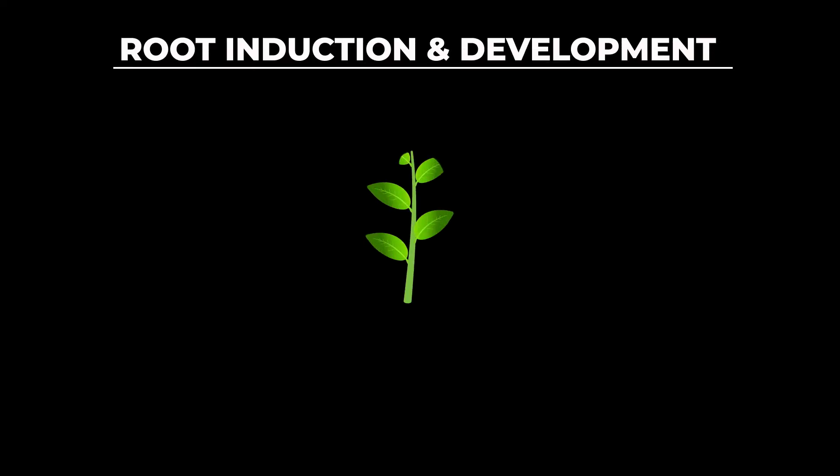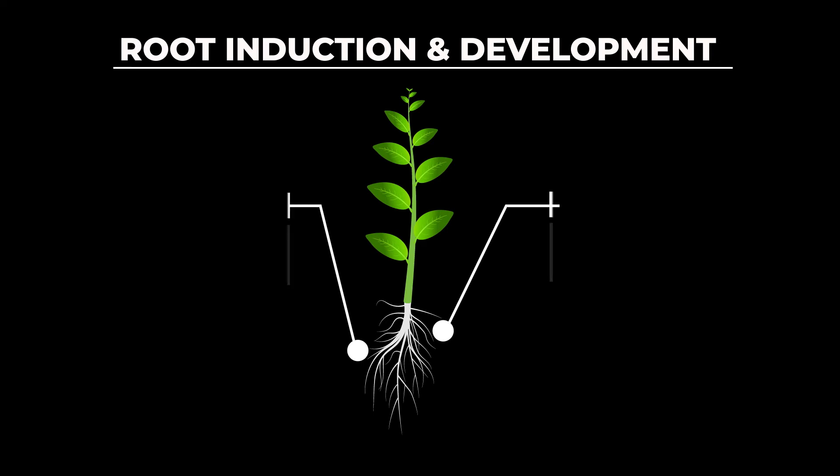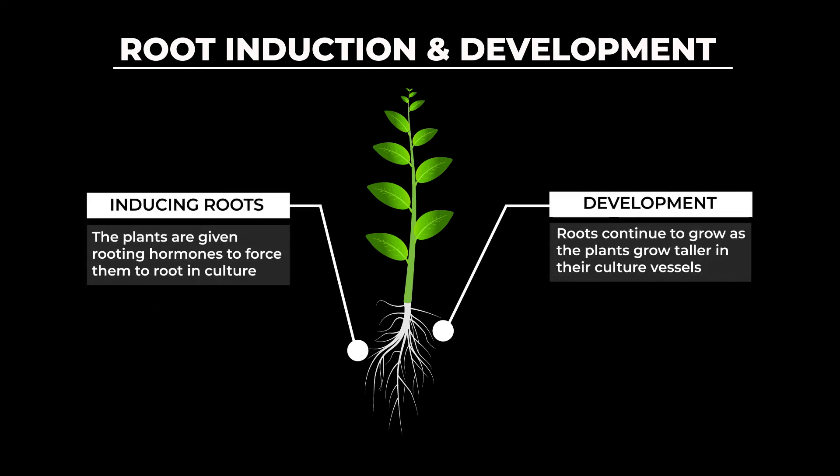Now that we have all these plants, we can move on to the next stage in our process: rooting the plants while they're still in their culture vessels. During the rooting phase, plants are grown in a solution that contains rooting hormones. This will induce or force the plants to grow roots while inside of their culture vessels.